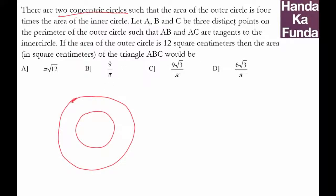Let ABC be three distinct points on the perimeter of the outer circle such that AB and AC are tangents to the inner circle. I will try and draw tangents here. So let's say this is AB and this is AC. Then if the area of the outer circle is 12 square centimeters, then the area of the triangle ABC will be how much?